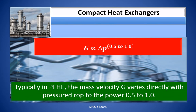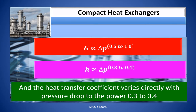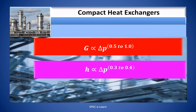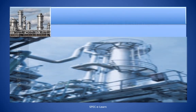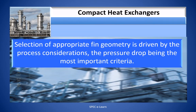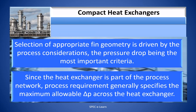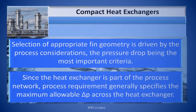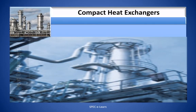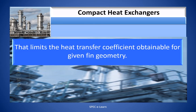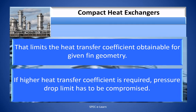Typically, in a plate fin heat exchanger, the mass velocity G varies directly with pressure drop to the power 0.5 to 1.0, and the heat transfer coefficient varies directly with pressure drop to the power 0.3 to 0.4. The selection of appropriate fin geometry is driven by process considerations, with pressure drop being the most important criterion. Since the heat exchanger is part of the process network, process requirements generally specify a maximum allowable ΔP across the heat exchanger, which limits the heat transfer coefficient for a given fin geometry. If a higher heat transfer coefficient is required, the pressure drop limit must be compromised.